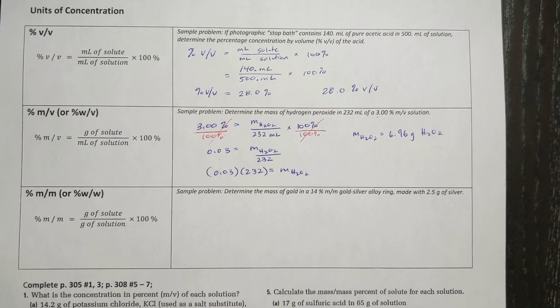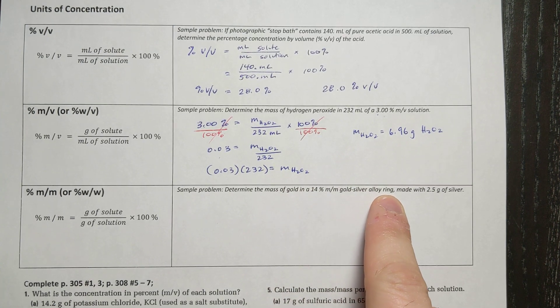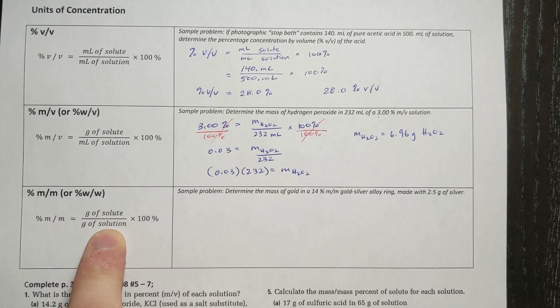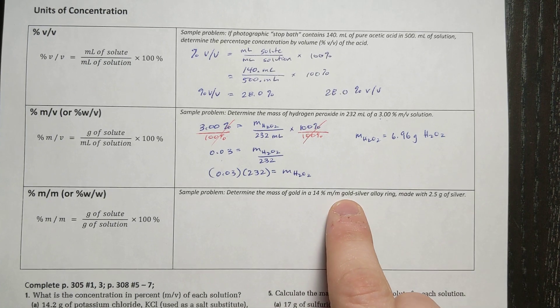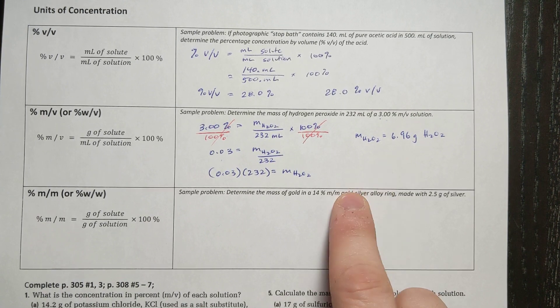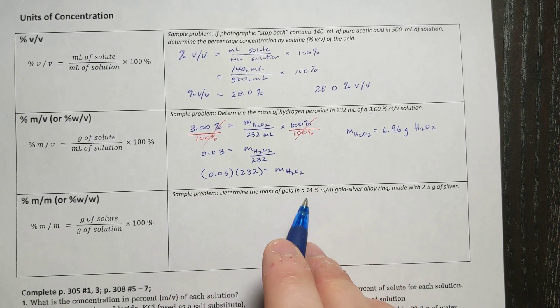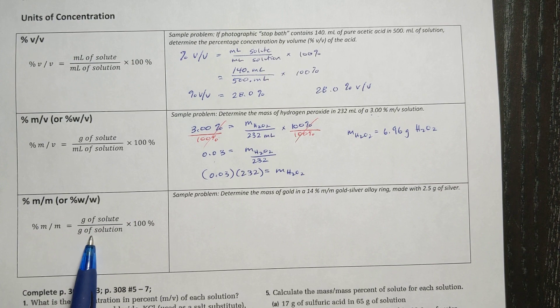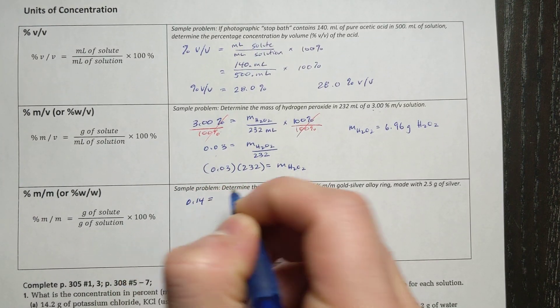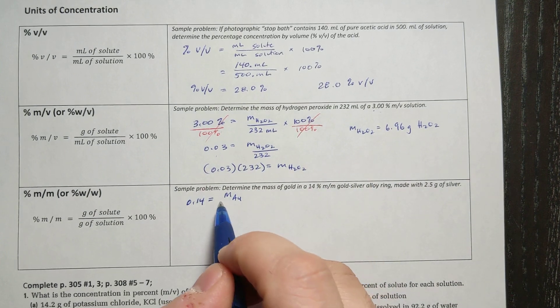So the final concentration that we are going to look at is percent mass per mass. So determine the mass of gold in a 14% mass per mass gold silver alloy ring made with 2.5 grams of silver. Well, percent mass per mass is grams of solute over grams of solution, so mass of solute over mass of solution. Here's the issue though. The solution is a gold silver alloy. So that means the solution is made up of both gold and silver. So when we go to do this calculation, we'll have to have in the solution both gold and silver. So I'm going to take this percent and I'm going to convert it to a decimal right away, 0.14.